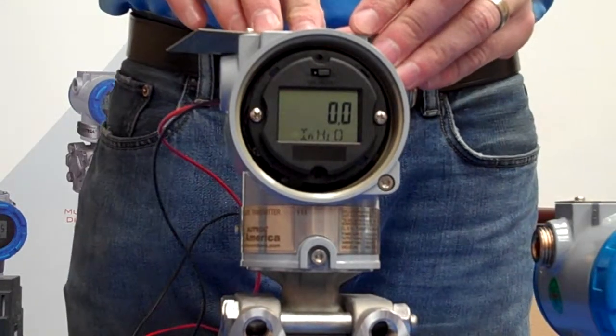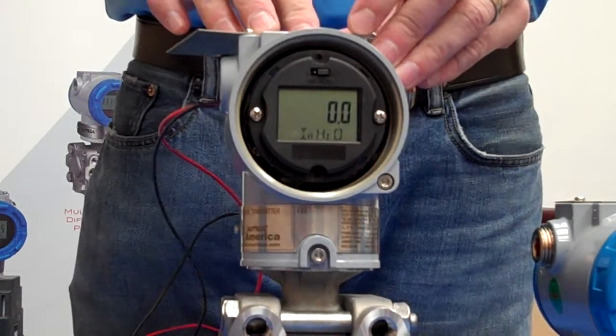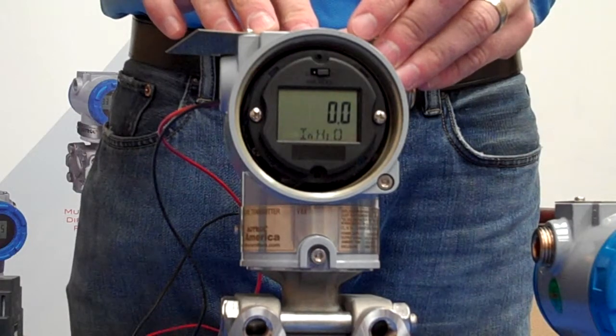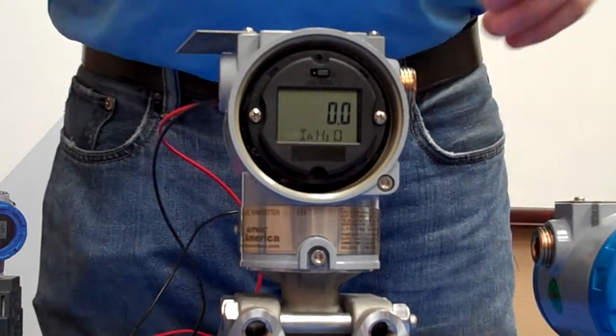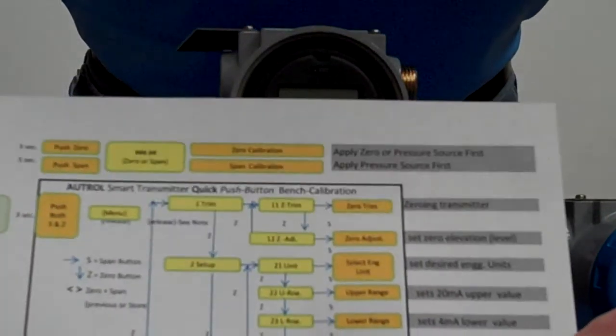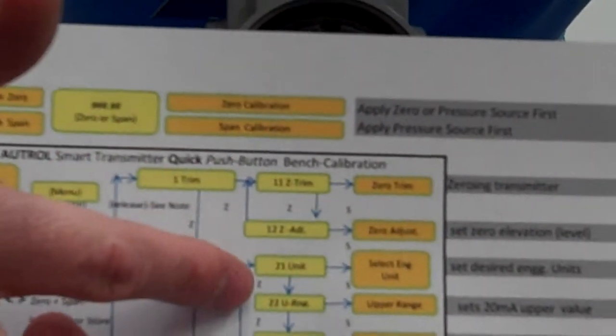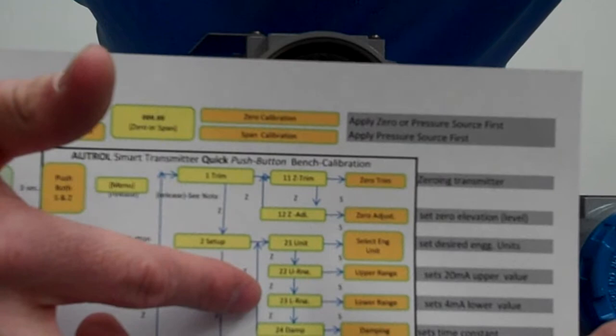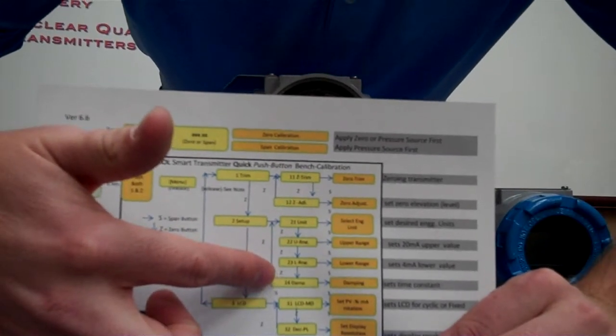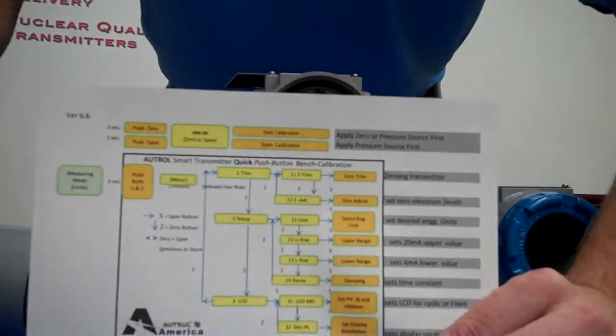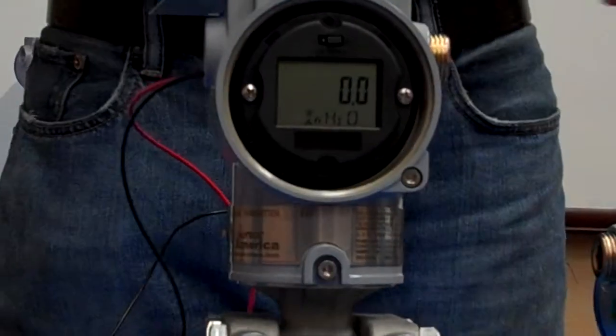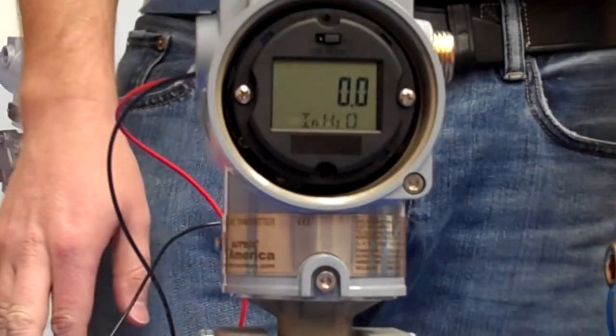Today we're going to introduce you to making changes to values using the push-button interface with the Autral Transmitter. This is very useful in a few different menu options here with the menu tree. We can make these changes to our upper range value, lower range value, dampening, as well as our zero adjust. Those four will all be used to make value changes.